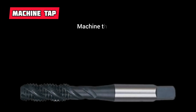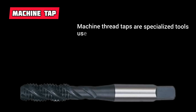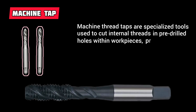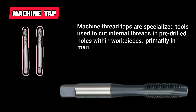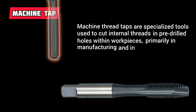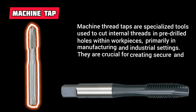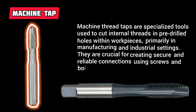Machine Thread Taps are specialized tools used to cut internal threads in pre-drilled holes within workpieces, primarily in manufacturing and industrial settings. They are crucial for creating secure and reliable connections using screws and bolts.